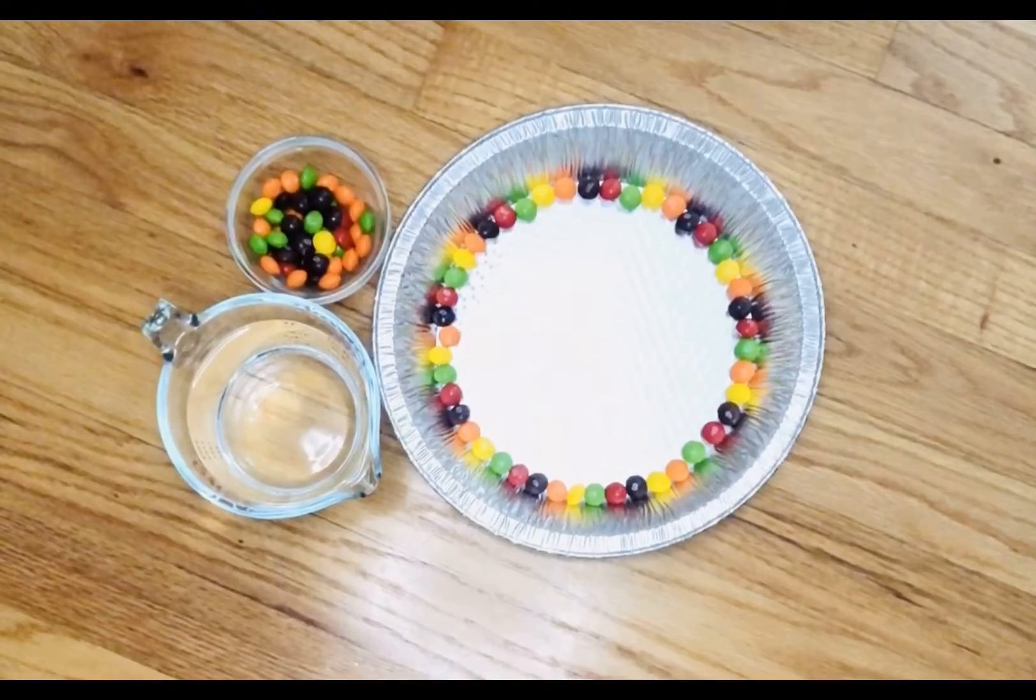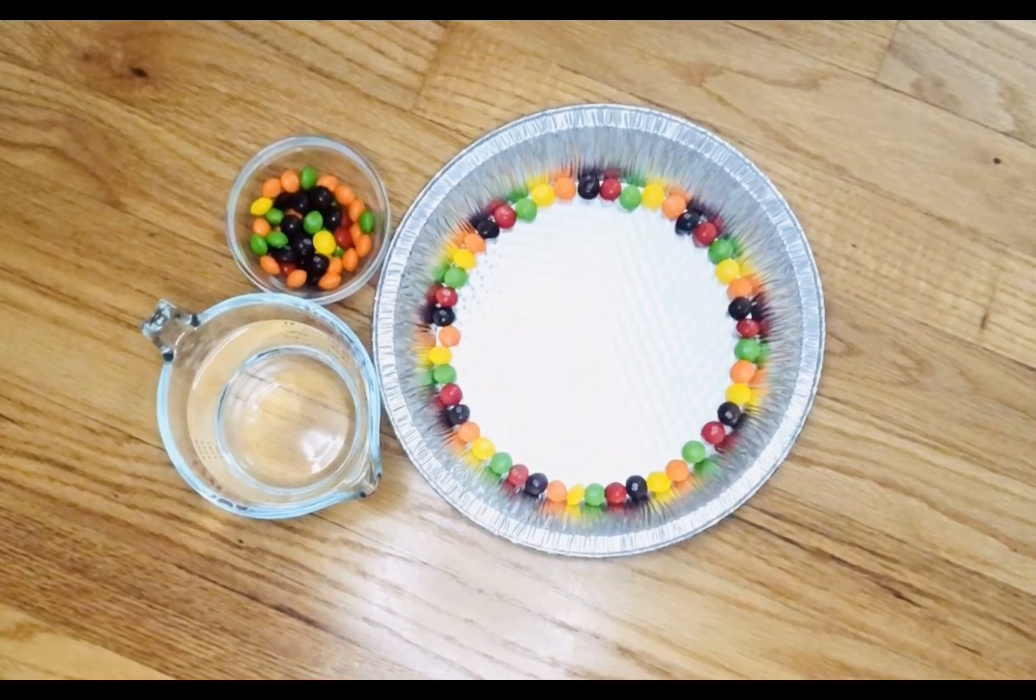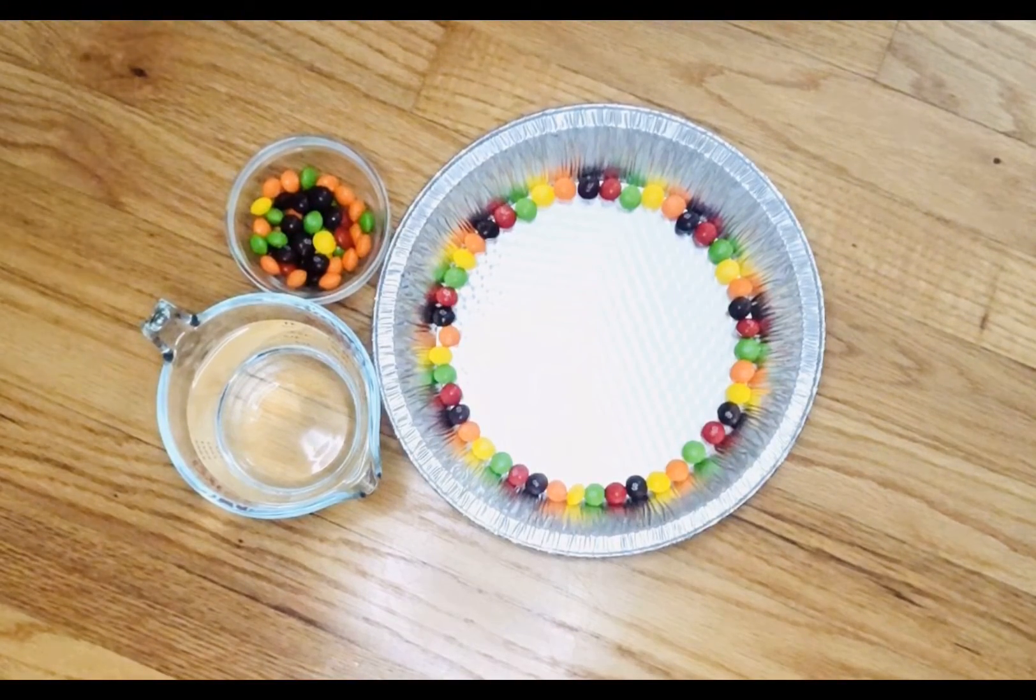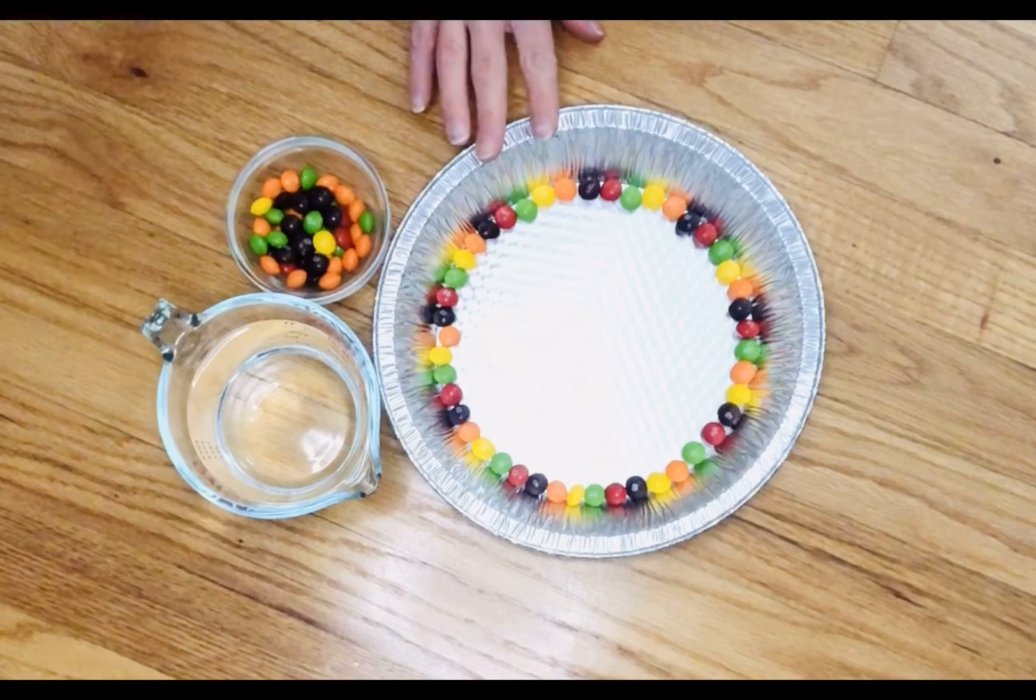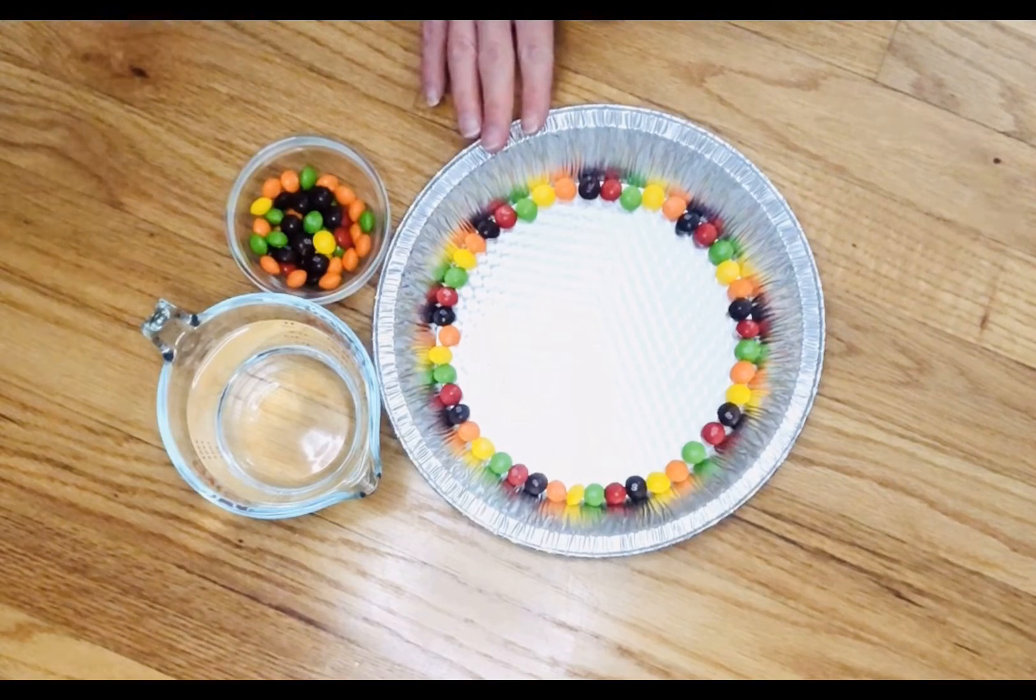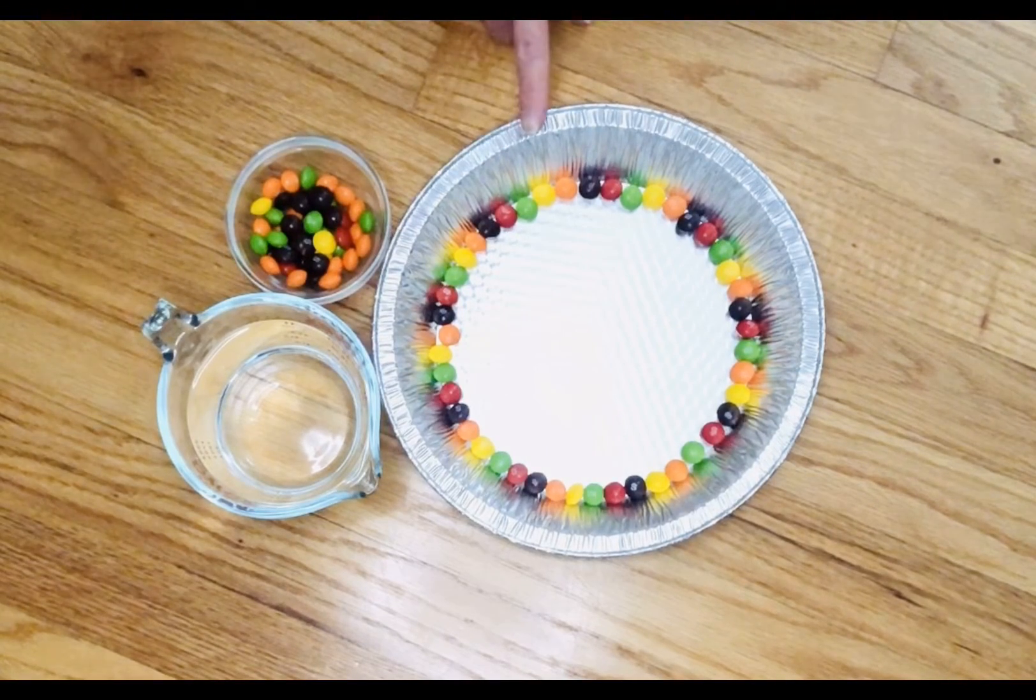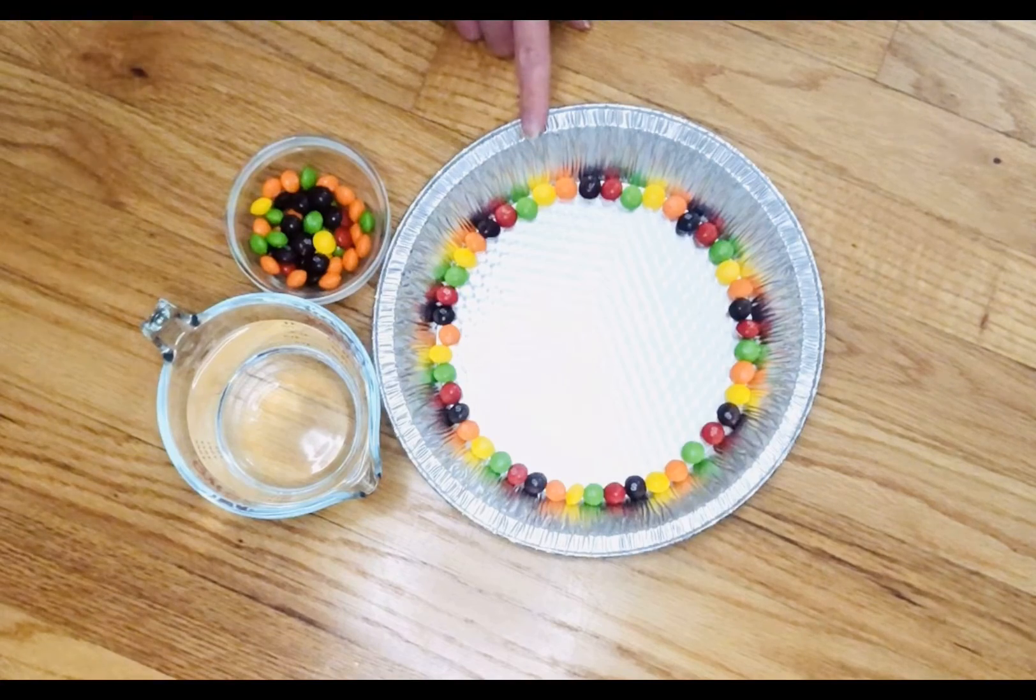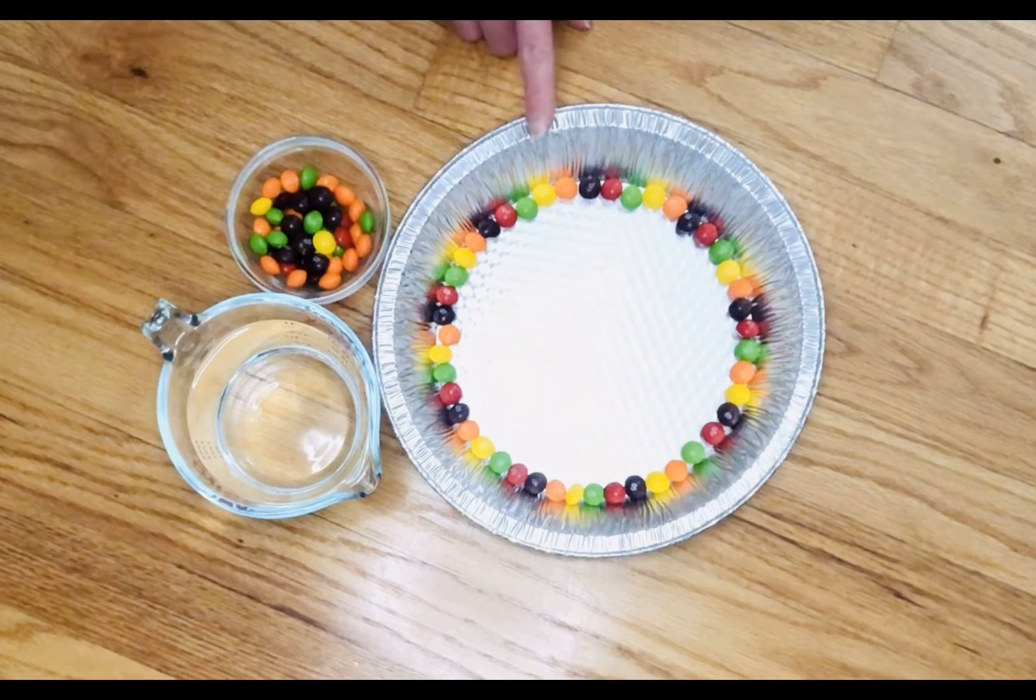The next experiment I'm going to show you is the skittle rainbow experiment. So for this you are going to need a shallow pan or dish. I am using a foil pie pan, but if you have a white serving dish that would work too.